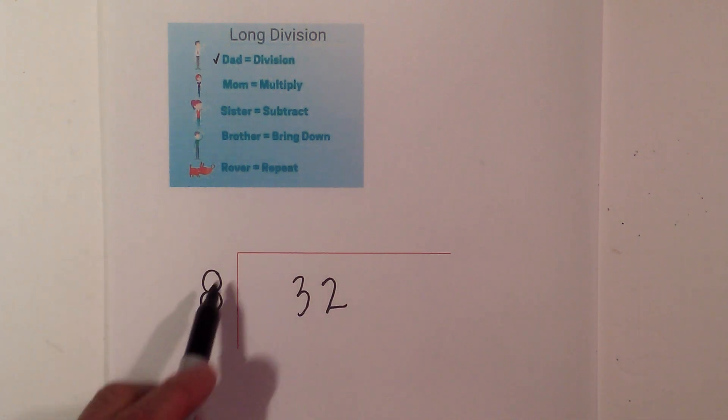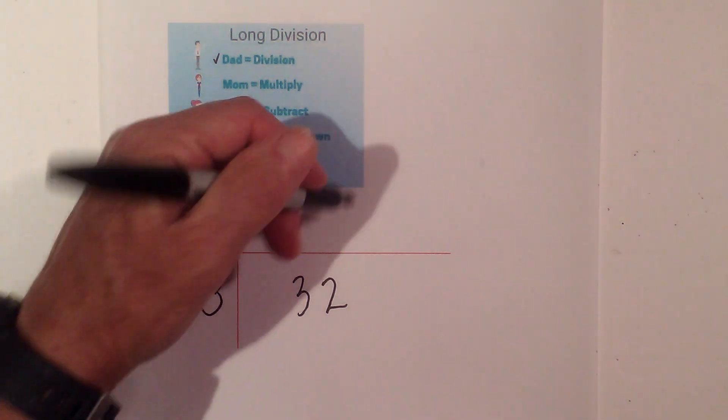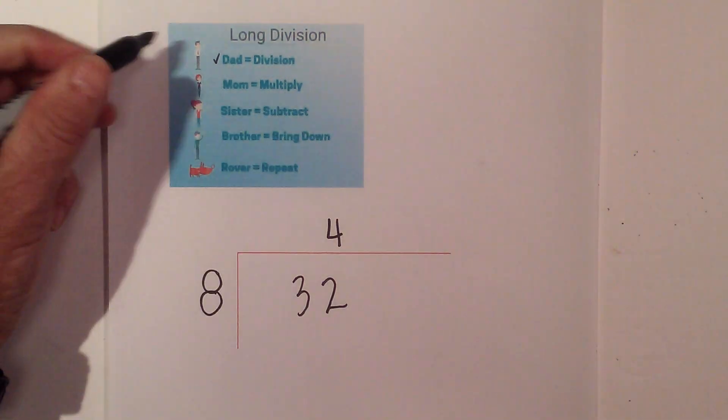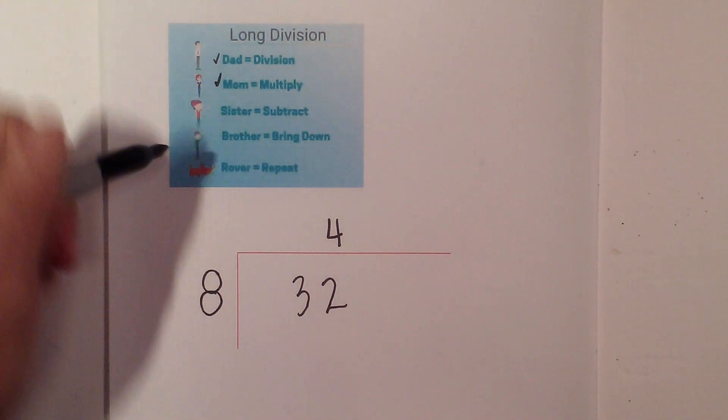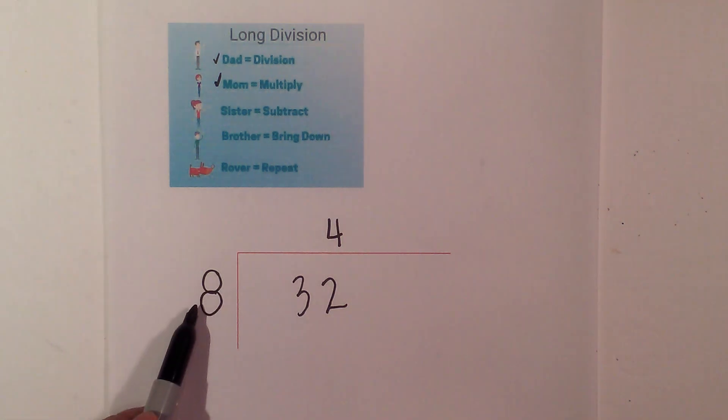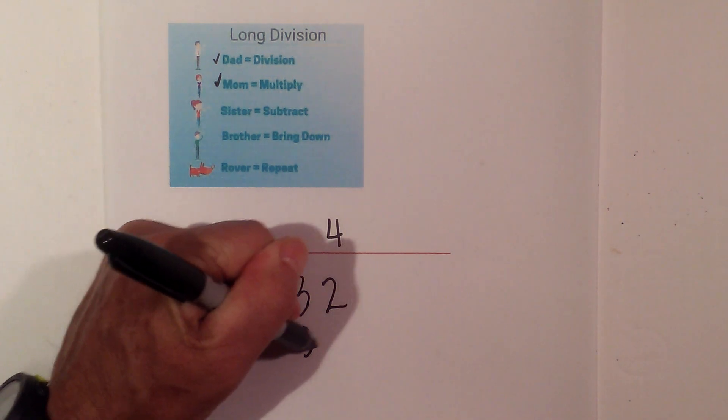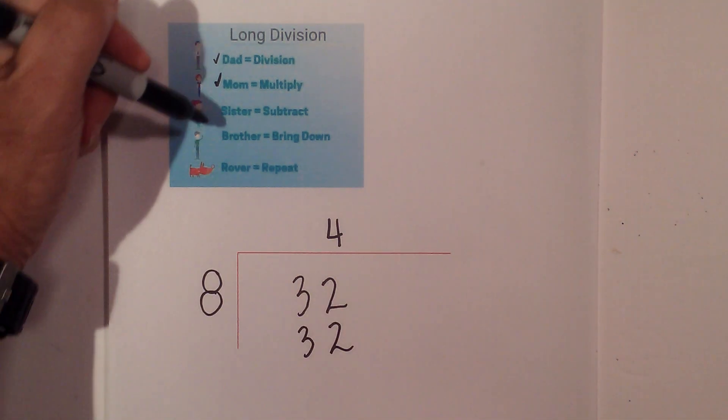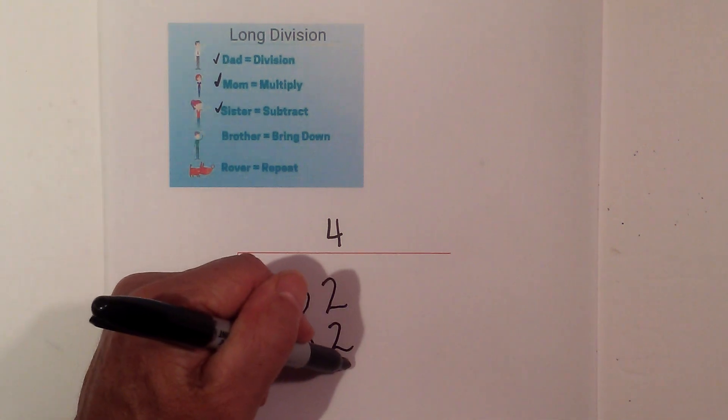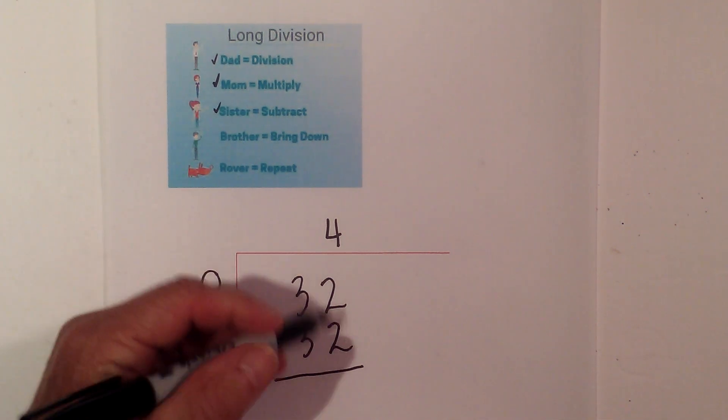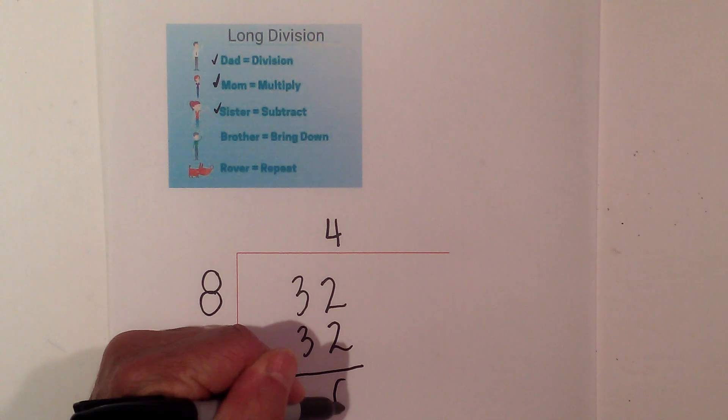So next, 8 goes into 32 four times. So I have divided and now I multiply. 4 times 8 is 32. Next I subtract with sister. 32 minus 32 is 0.